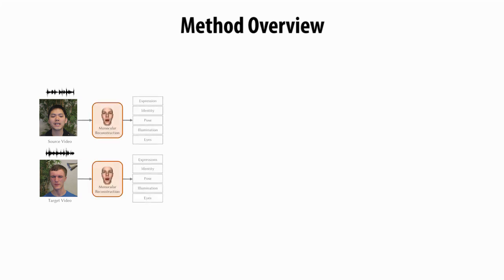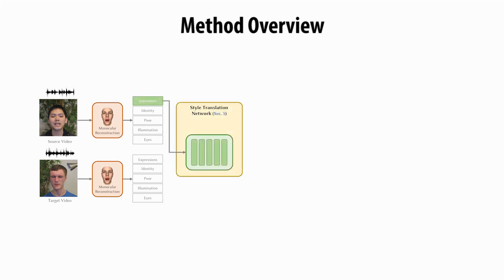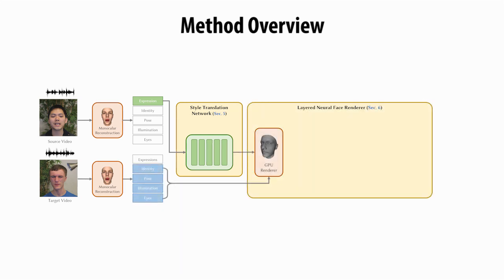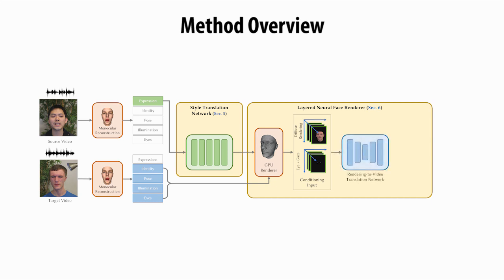Given a source and a target video, we use a monocular face reconstruction technique to estimate the underlying facial parameters. We feed the source expression parameters to a style translation network. The network modifies these expressions to match the target style while we keep the remaining face parameters of the target actor. We then render the target face with the newly translated facial expressions. This produces a diffuse rendering and an eye gaze mask.